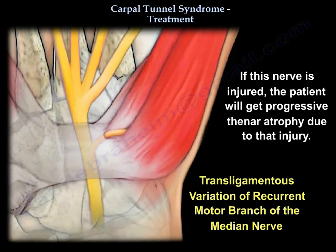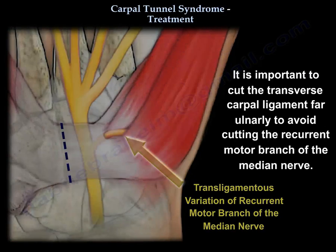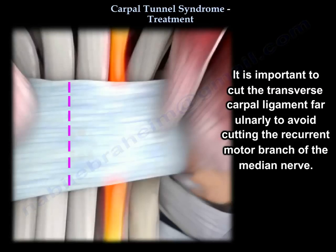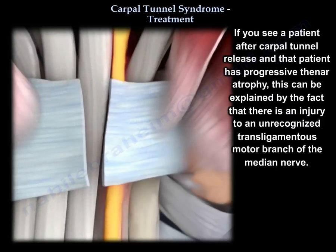If the nerve is injured, the patient will get progressive thenar atrophy due to that injury. It is important to cut the transverse carpal ligament far ulnarly to avoid cutting the recurrent motor branch of the median nerve. So, if you see a patient after carpal tunnel release with progressive thenar atrophy, that can be explained by injury to an unrecognized trans-ligamentous motor branch of the median nerve.